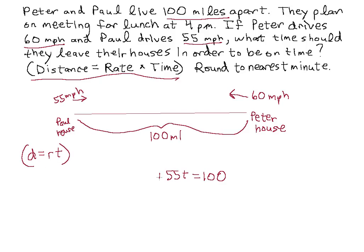Plus 60 miles an hour times the same unknown amount of time. So this expression describes Peter's traveling, and this expression describes Paul's traveling. So together, they're traveling 100 miles. So now we actually have an equation to solve, so let's go ahead and solve it.